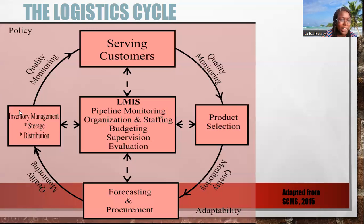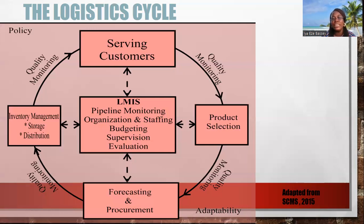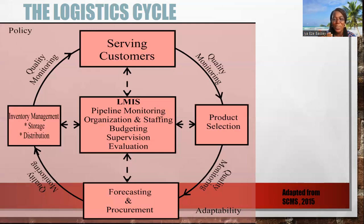The logistic cycle also depends on your policy environment — it does not work alone, but within a context. Your policy environment includes government regulations and how policies affect the logistic system. Another important external factor is adaptability. The only constant in life is change — financial allocations will change, staff strength will change, policies can change. How well can you adapt to keep your program alive?